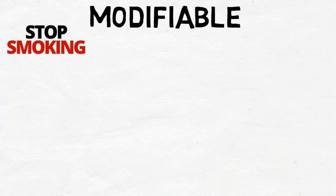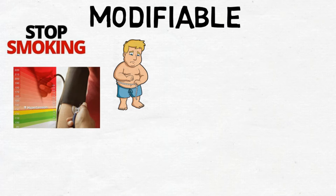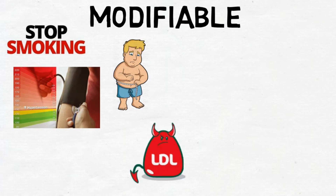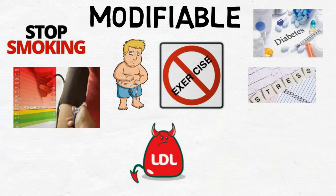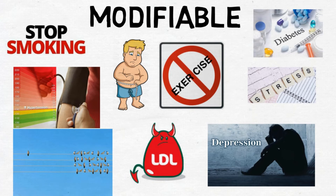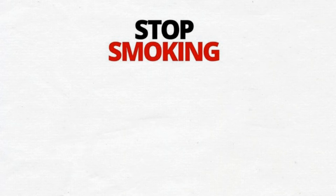The second group are the modifiable or lifestyle risk factors. This group is much larger than the first group, and the good news is that by making changes to a healthier lifestyle you can reduce your risk of developing further heart disease in the future. The risk factors in this group include smoking, being overweight, high blood pressure, high cholesterol, lack of regular exercise, diabetes, stress, depression, and social isolation. We will now look at each of these risk factors and how we can reduce their impact.